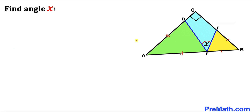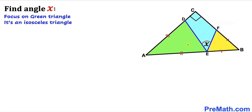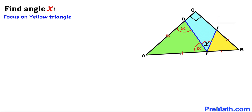Let's get started with the solution. Let's focus on this green triangle. We know that this is an isosceles triangle since this side length equals this side length. Therefore, this angle has got to be equal to this angle. Let me label this angle as alpha — then this angle has got to be alpha as well.